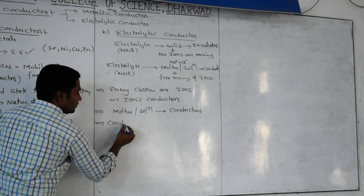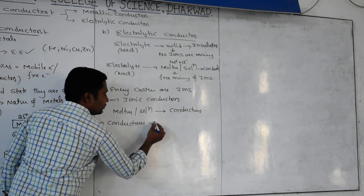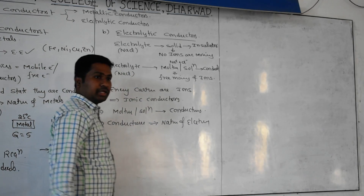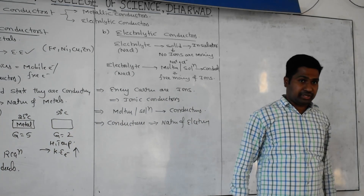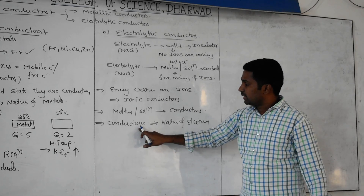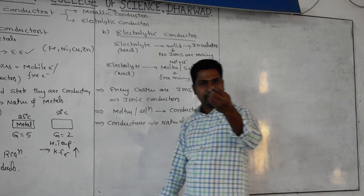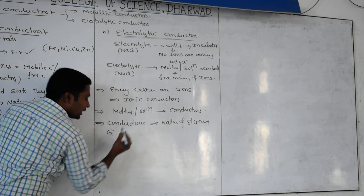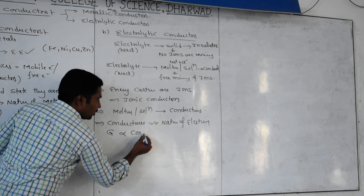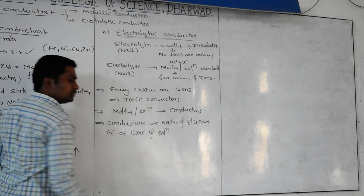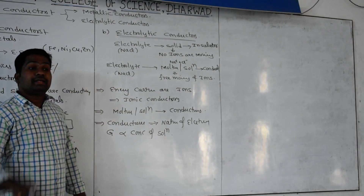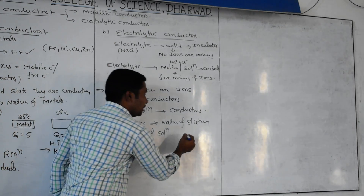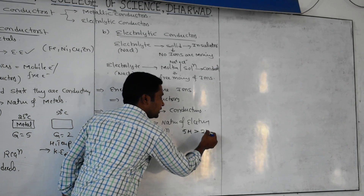Conductance in electrolytic conductors depends on the nature of the electrolyte. Conductance is directly proportional to the concentration of the solution - more concentration means more ions, more ions means more conductance. A 5 molar solution has more conductance than a 2 molar solution because of more ions.